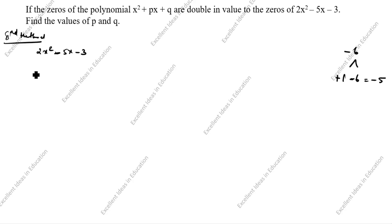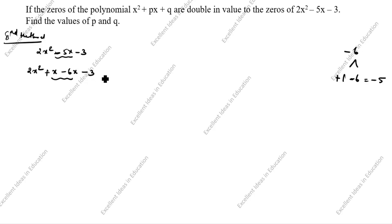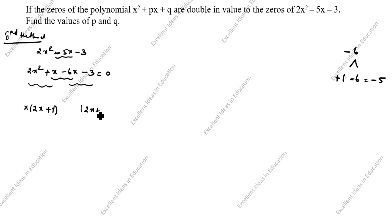Now we will split the middle term: 2x squared plus x minus 6x minus 3. We group into two terms. From the first group, x is common, giving x times (2x plus 1). From the second group, we factor out minus 3, giving minus 3 times (2x plus 1).